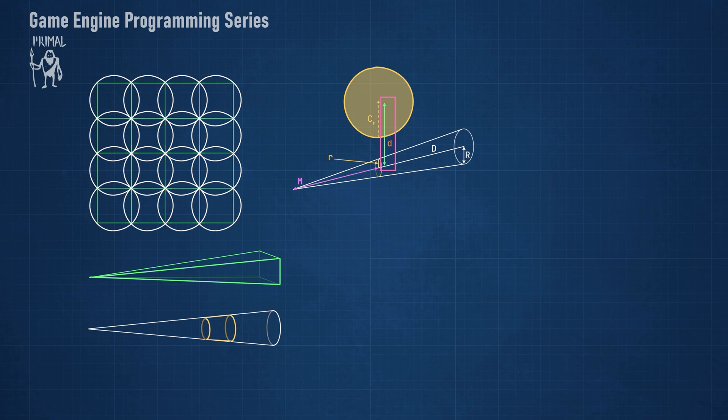We can compute the distance of the sphere's center to the axis of the cone. We can also calculate the cone radius at the point where the sphere's center is projected onto the cone axis. We call this radius lowercase r.